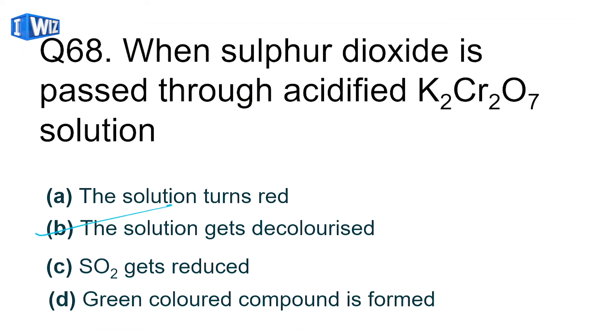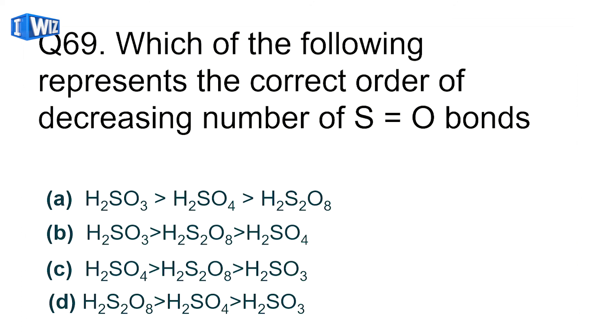Which represents the correct order of decreasing number of S=O bonds? You need to draw the structures of oxo acids. Most S=O bonds are in H2S2O8, then H2SO4, then H2SO3. H2S2O3 has one side with lone pair and one double bond. H2SO4 has one more double bond, and H2S2O8 with two sulfurs has four double bonds. D is correct.